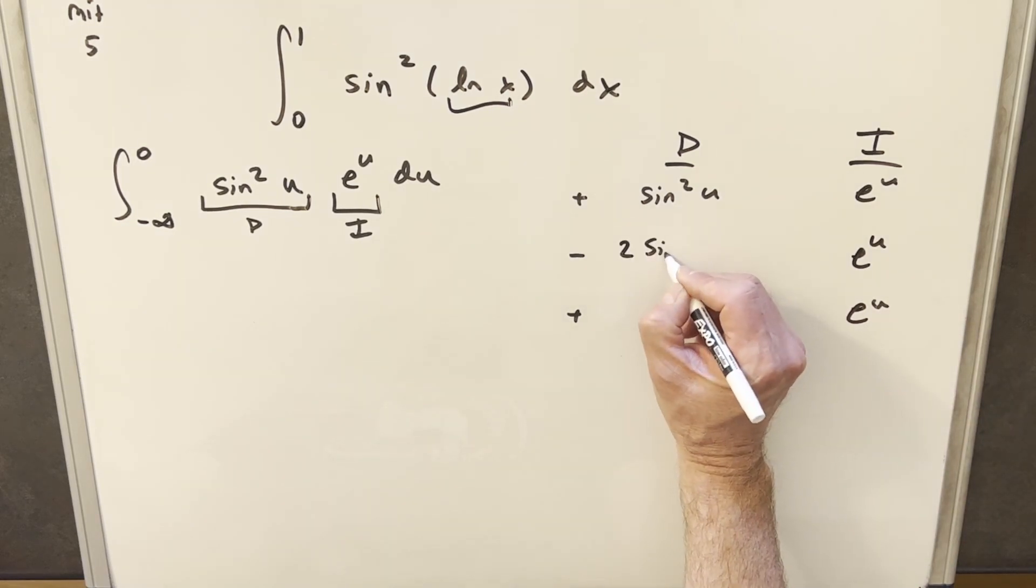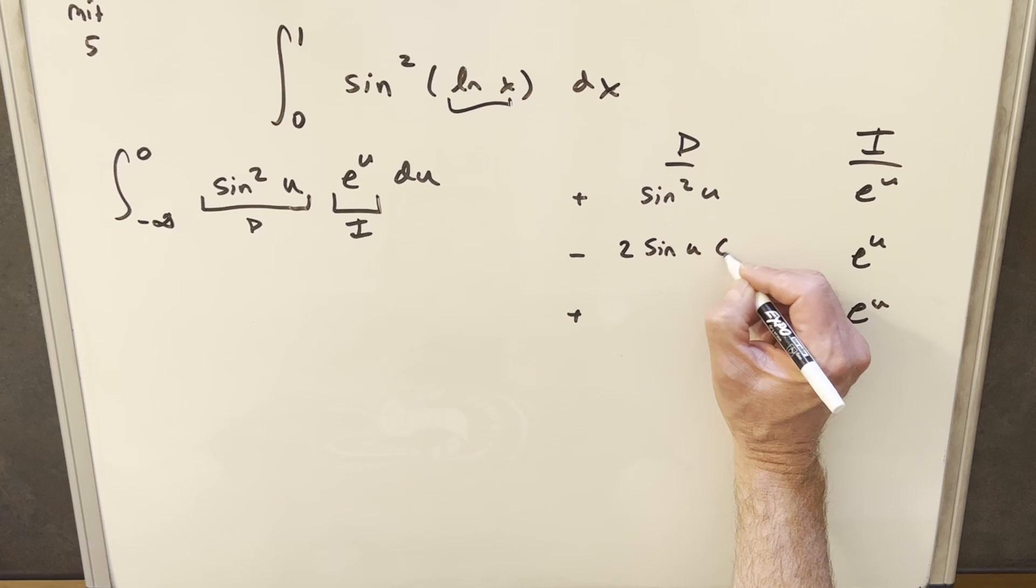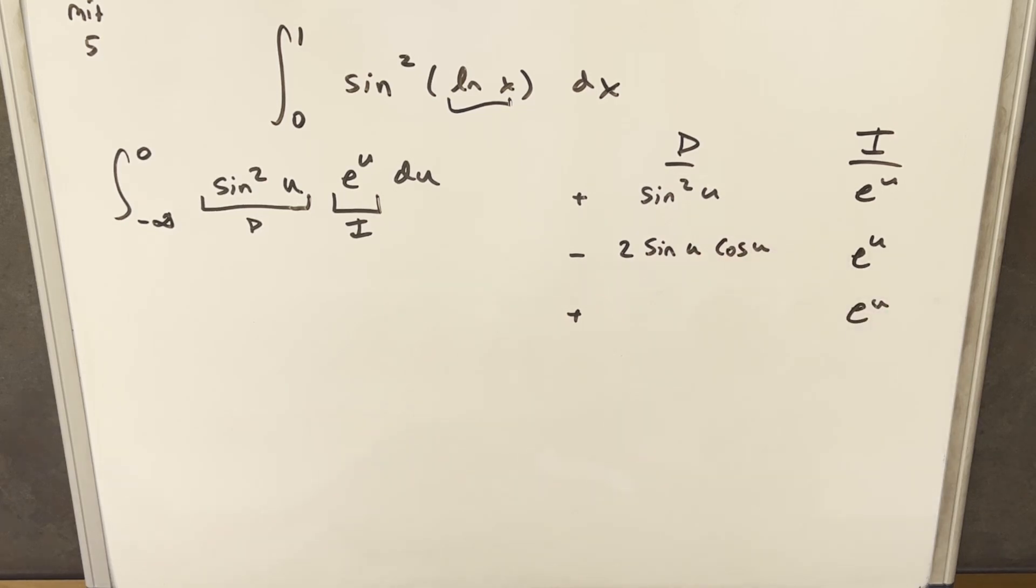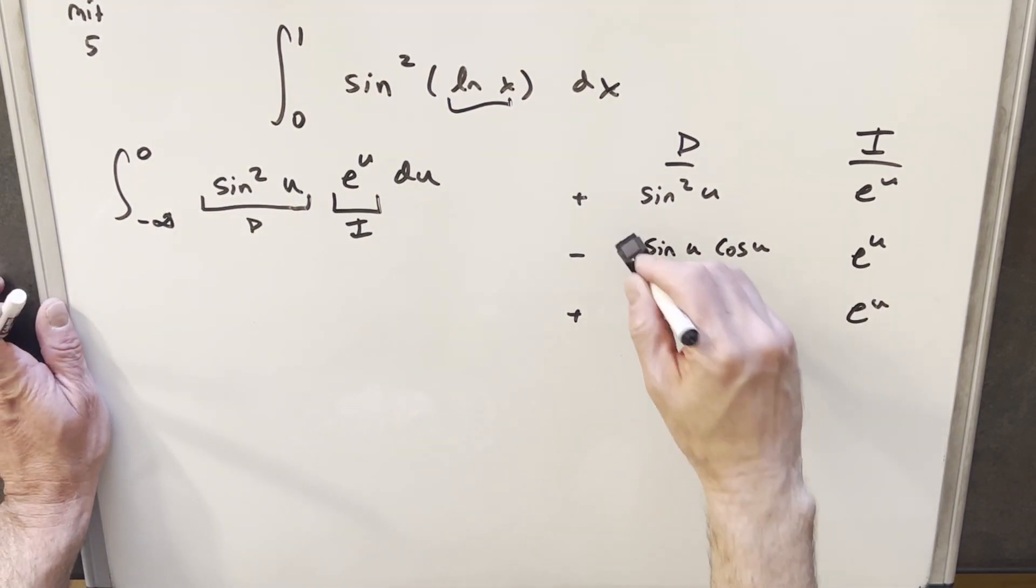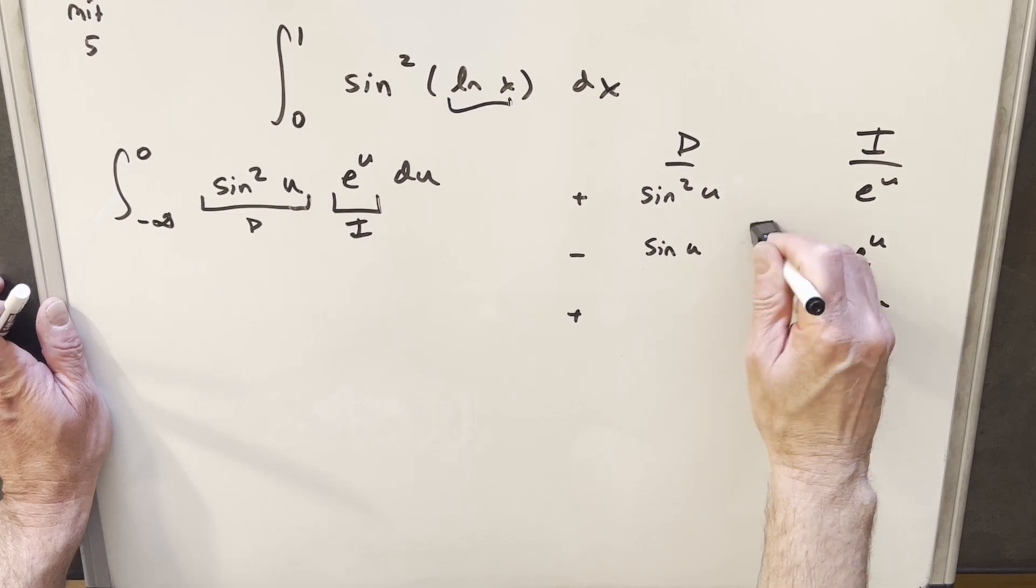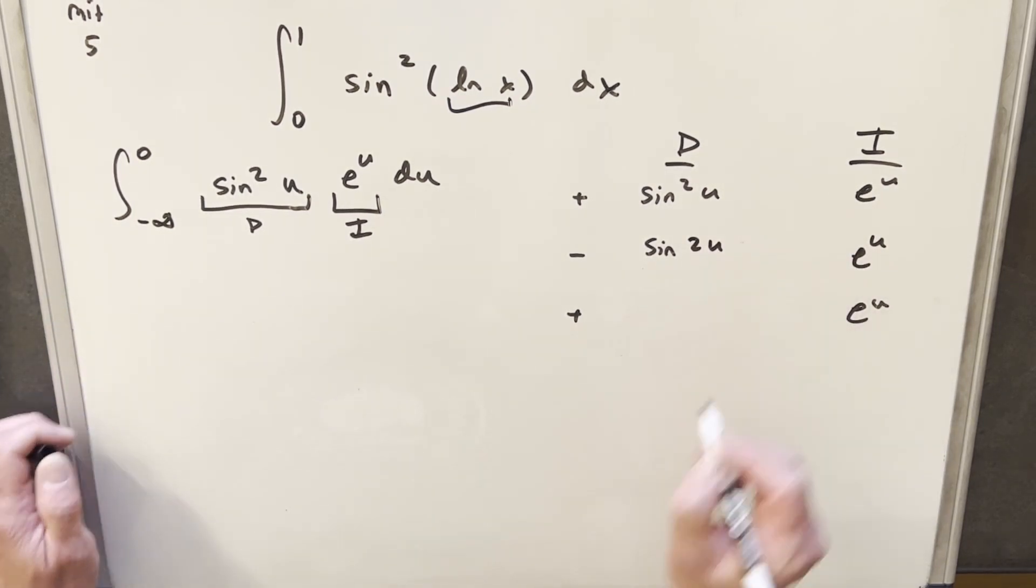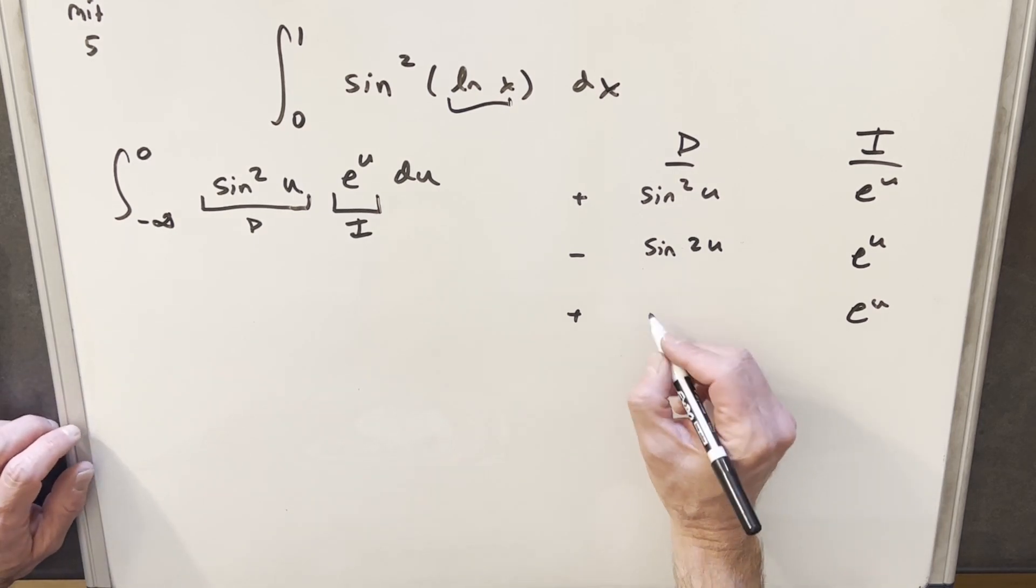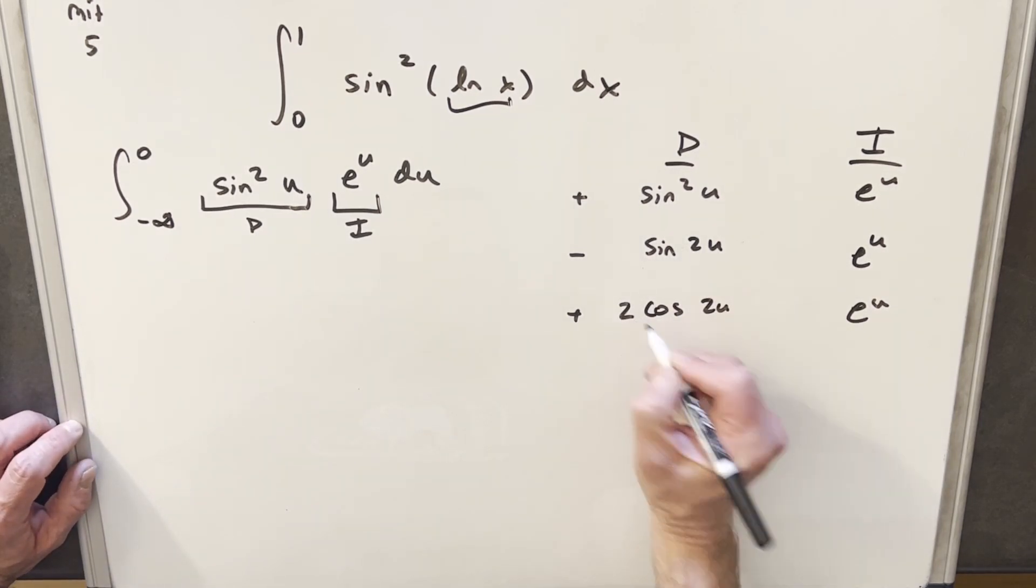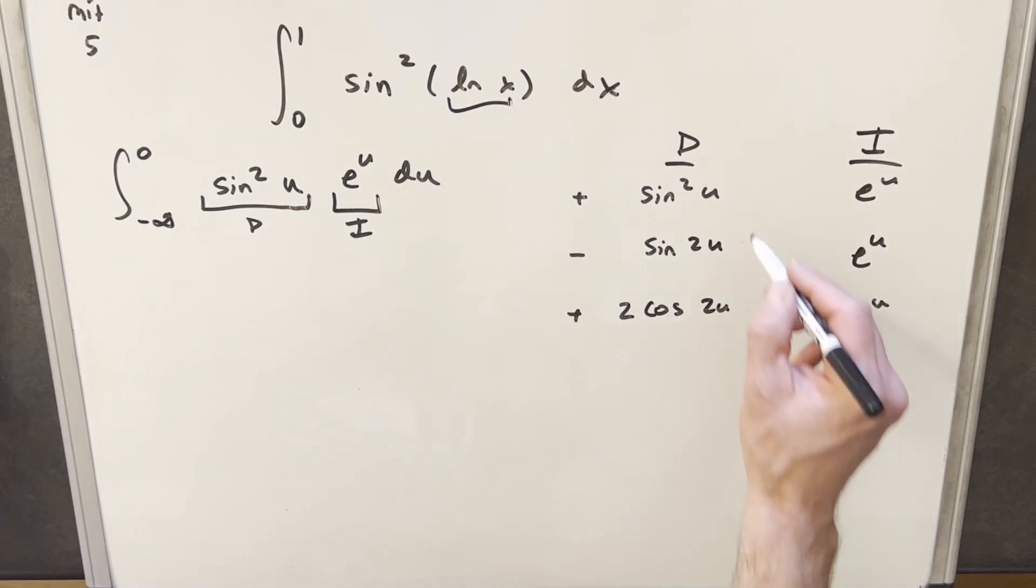Differentiating here, we're going to have 2 sine u, then chain rule cosine u. But you'll notice this is the same thing as sine of 2u, so I'm just going to rewrite this as sine 2u. Then differentiating again here, this is going to be cosine 2u. But we need to pull a 2 out in front. So these diagonals will be part of the solution.